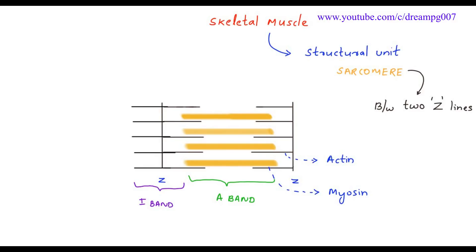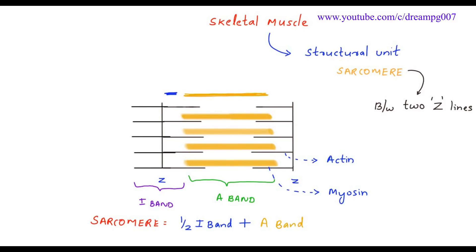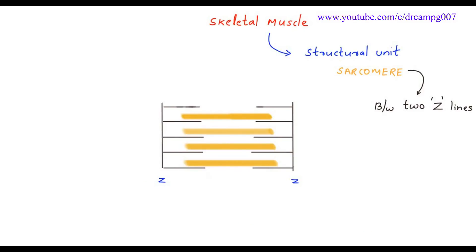The portion where only the thin actin filaments are seen is called the I band. A sarcomere is formed by half I band plus an A band and a half I band. The portion inside the A band where only thick filaments are seen is called the H zone.